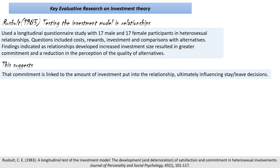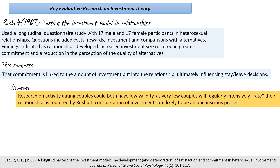Of course, we can use the evaluative extension to say that this study on dating couples has quite low validity. If you're asking partners to intensively rate their relationship on a regular basis, that isn't really what people do explicitly — they might do it unconsciously, but they're very rarely writing these things down. Also, this study might lack generalisation because it was done on American students, and self-report questionnaires inherently have a response bias aspect. We might also criticise it because it's correlational.